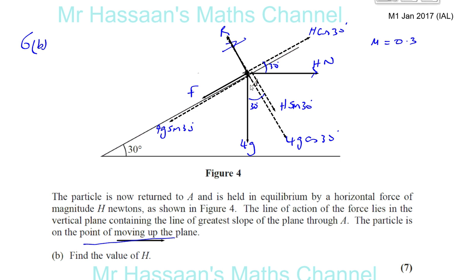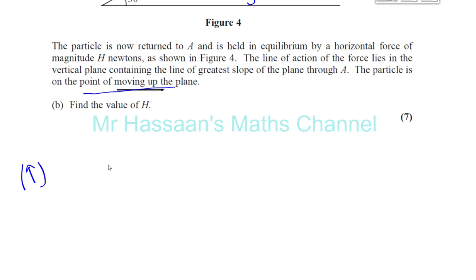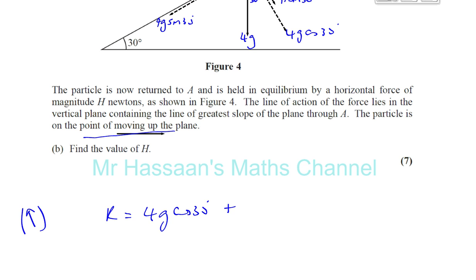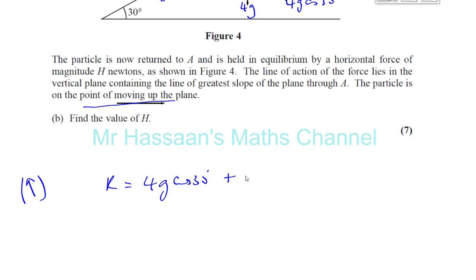Let me draw it as a solid line. It's not a component, it's the actual force itself. So that's the reaction, which is always perpendicular to the contact. So we can say now there's two things that it's equal to. It's equal to 4G cosine theta. So R is equal to 4G times cosine theta, plus you've also got acting in that same direction, H sine 30, H times sine 30. So that's resolving perpendicular to the plane.